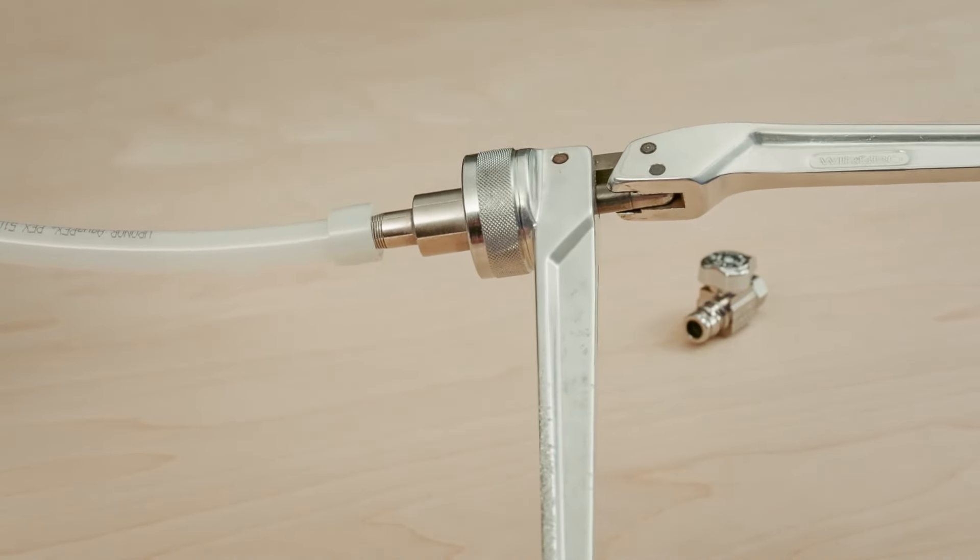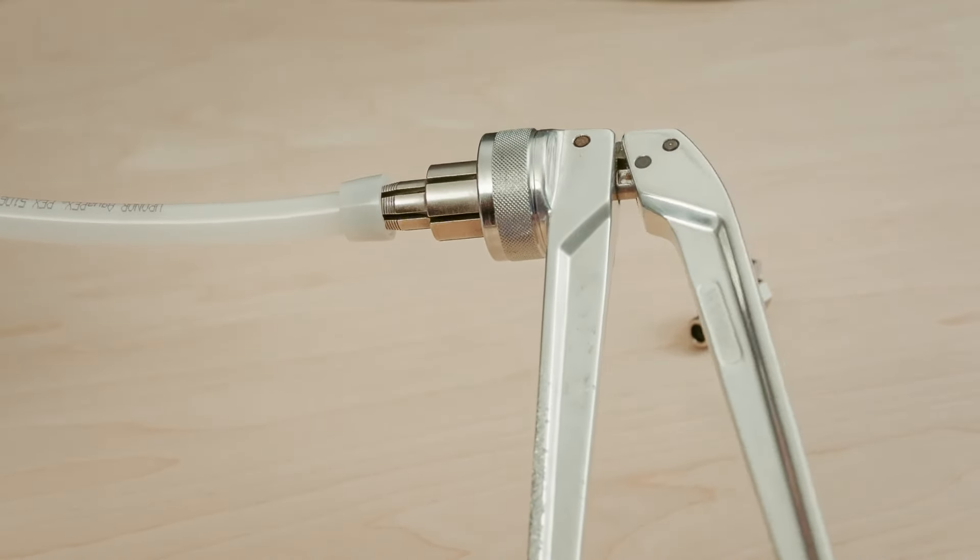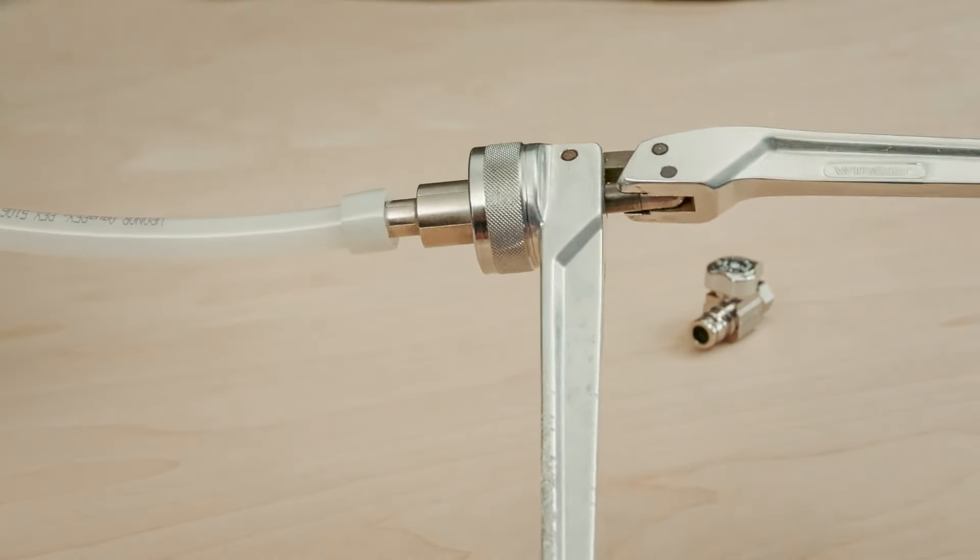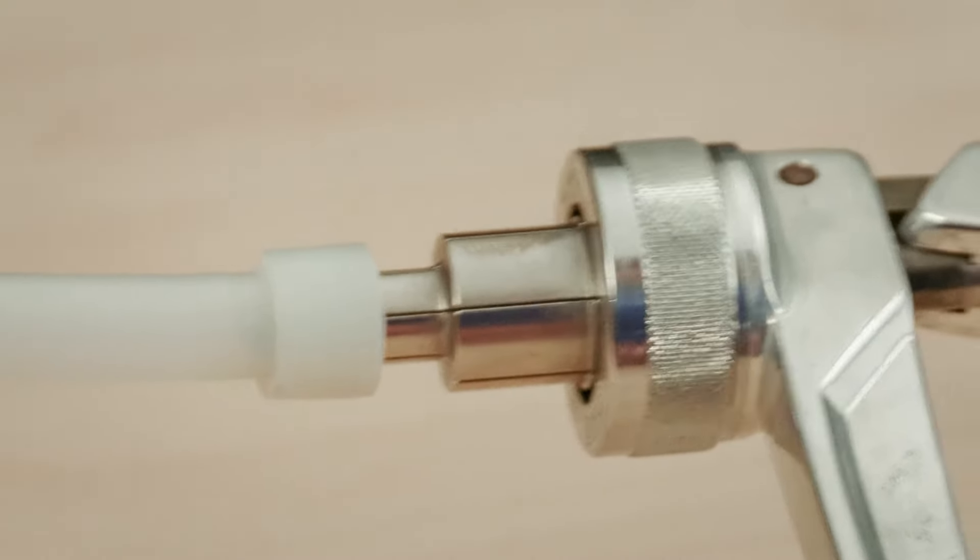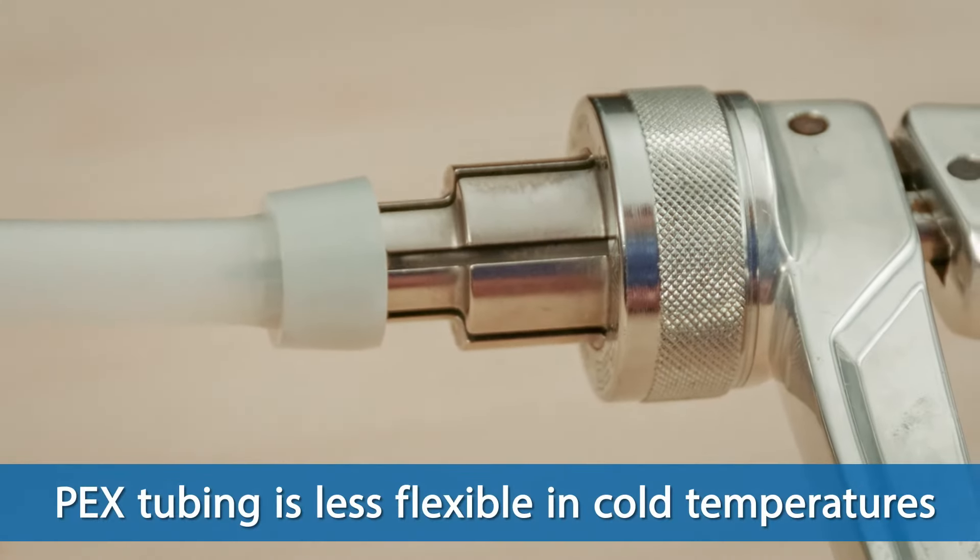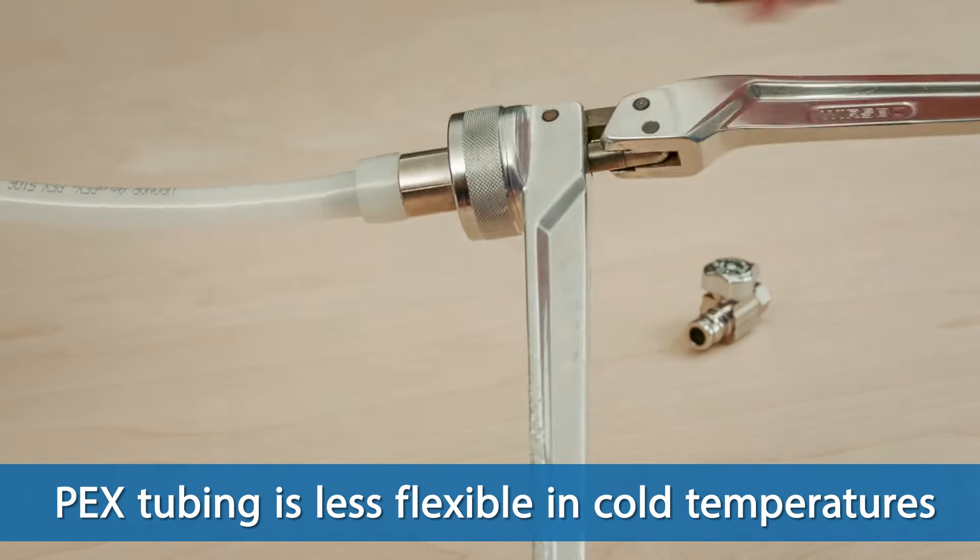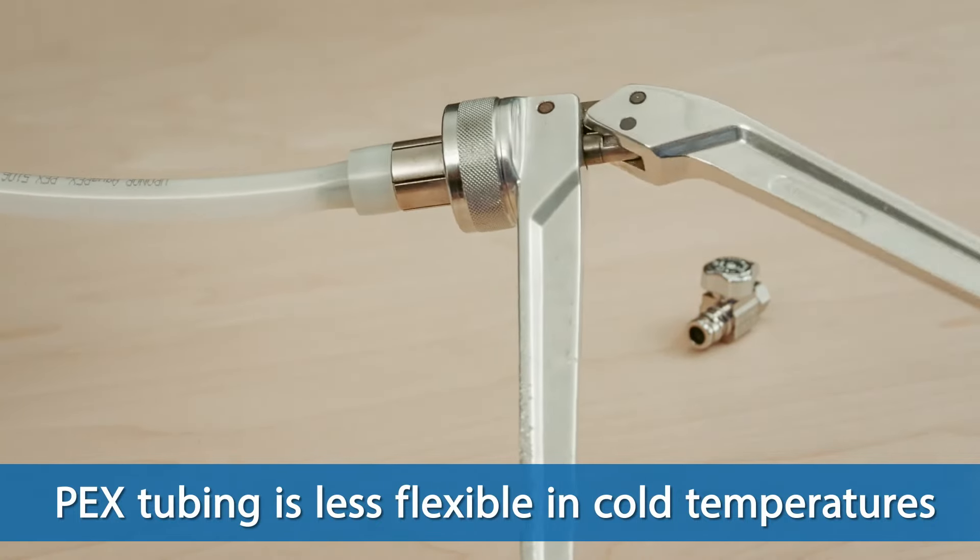Insert the head of the expansion tool into the PEX tubing. Manually operate the tool to expand the diameter of the tube. Note that the PEX tubing is less flexible in colder temperatures and might take a bit more effort to expand the pipe.